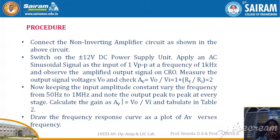This is the procedure. Connect the circuit diagram as shown. Apply plus or minus 12V from the DC RPS. Apply AC from the function generator, 2V peak-to-peak or 1V, with frequency 1kHz. Obtain the output from the CRO. Measure the output voltage V0 and check that the gain equals 2. Then keep the input amplitude constant and continuously vary the frequency from 50Hz to 1MHz. Tabulate the output values in the tabular column.